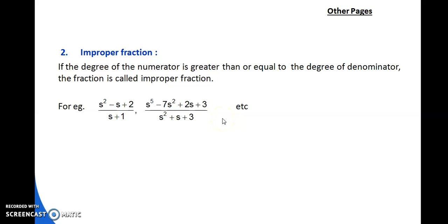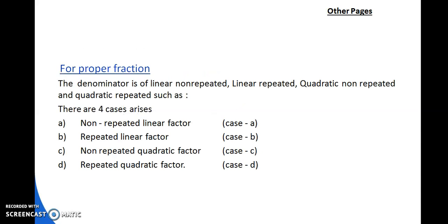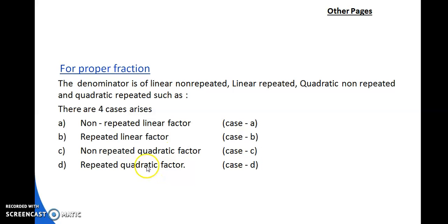For proper fractions, the denominator can be of four types: Case A — non-repeated linear factor; Case B — repeated linear factor; Case C — non-repeated quadratic factor; Case D — repeated quadratic factor. For Case A (non-repeated linear), we write A/(s−a) + B/(s−b). For linear factors, we take one constant at a time.